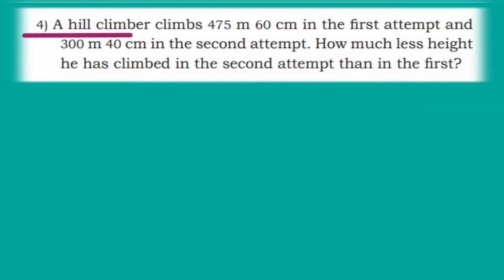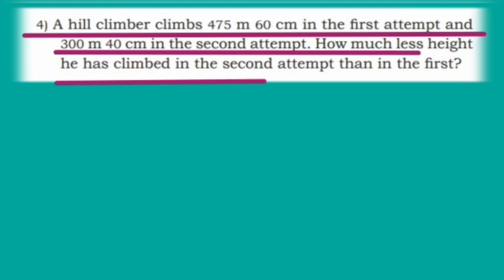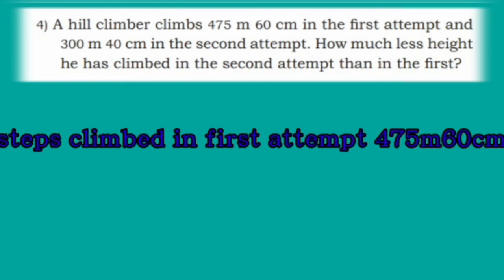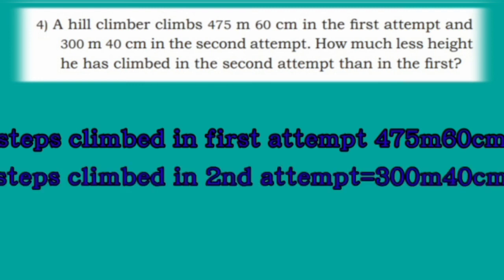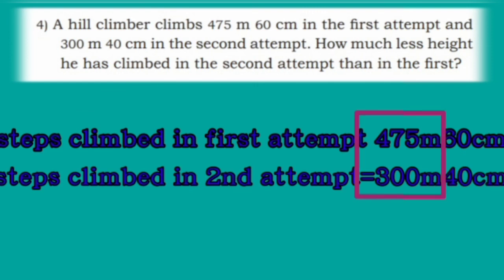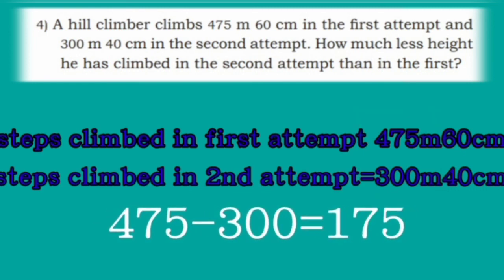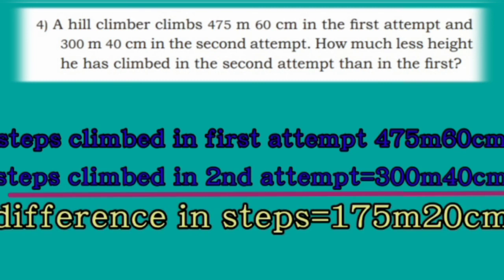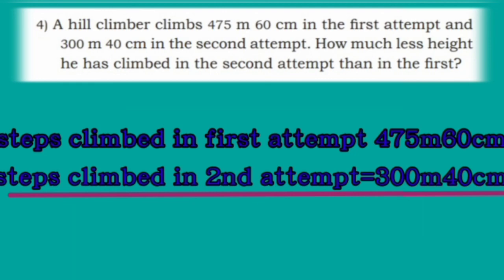Now fourth one: A hill climber climbs 475 meter 60 cm in the first attempt and 300 meter 40 cm in the second attempt. How much less height did he climb in the second attempt than in the first? Steps climbed in first attempt: 475 meter 60 cm; second attempt: 300 meter 40 cm. First subtract centimeters: 60 minus 40 is 20 cm. Next subtract meters: 475 minus 300 is 175 meter. So the difference is 175 meter 20 cm.